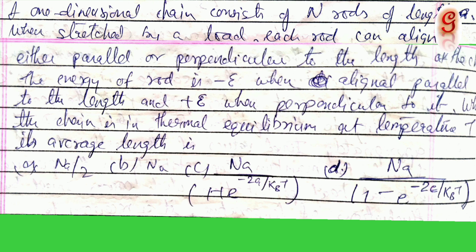When the chain is in thermal equilibrium at temperature T, its average length is: Option A: nA/2, Option B: nA, Option C: nA/(1 + e^(-2ε/kBT)), and Option D: nA/(1 - e^(-2ε/kBT)).